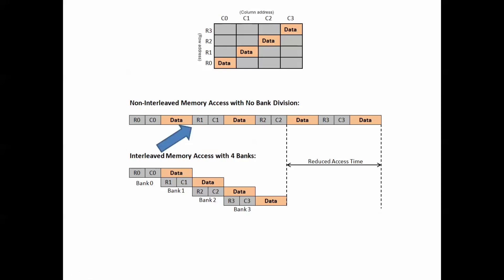However, in an interleaved memory access, the access of subsequent memory addresses interleaved across banks can be overlapped. As a result, the overall access time for the same amount of data is reduced considerably.